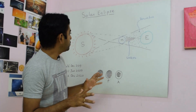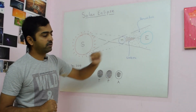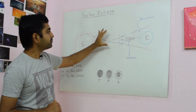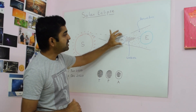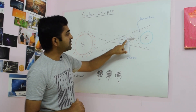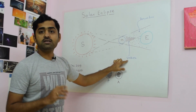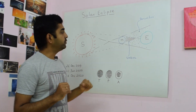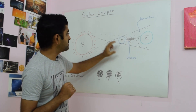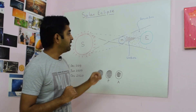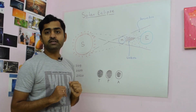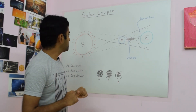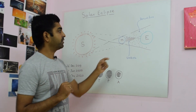Now let us see what happens here. This is the Sun, Moon and Earth. Sun's rays come here and fall on Earth, but when the Moon comes in between, the Moon will cast a shadow. If the Moon is casting a direct shadow on the Earth, as seen by the shaded region, that is called the Umbral Shadow. If you happen to be in this region on Earth, you will observe a Total Solar Eclipse, which means no rays from the Sun can reach you. If you happen to be in the region called the Penumbral Shadow, you will experience a Partial Solar Eclipse, meaning part of the Sun is covered by the Moon.